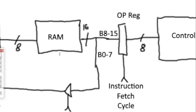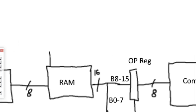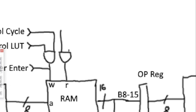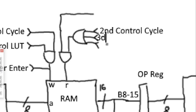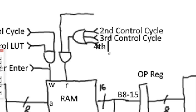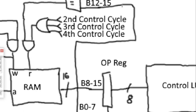Three signals — it's going to be the enter signal, and it's also going to be an AND between the control lookup table, second control cycle, third control cycle, and fourth control cycle. So it looks like we're taking the output of the RAM before the op register, tapping the last 4 bits — bits 12 through 15 — checking to see if it's equal to 2. If it is, and it's either the second, third, or fourth control cycle, then RAM is disabled.